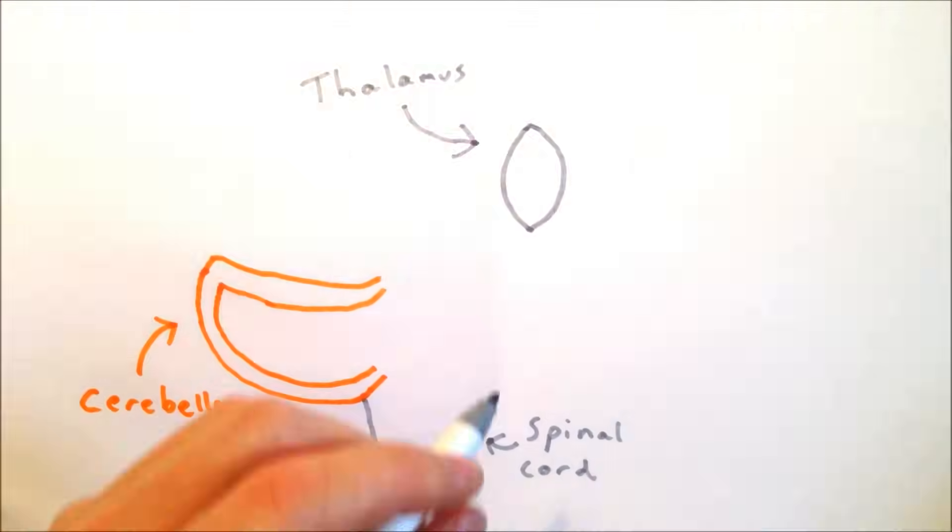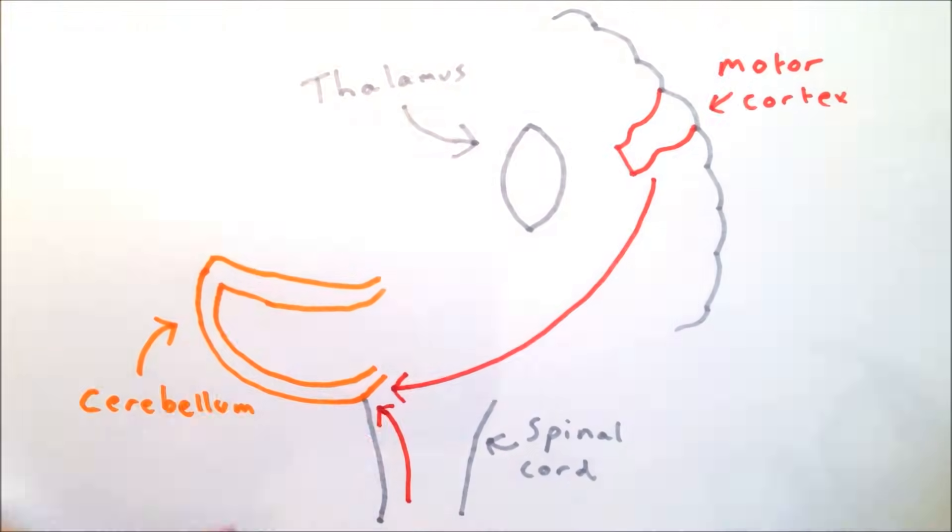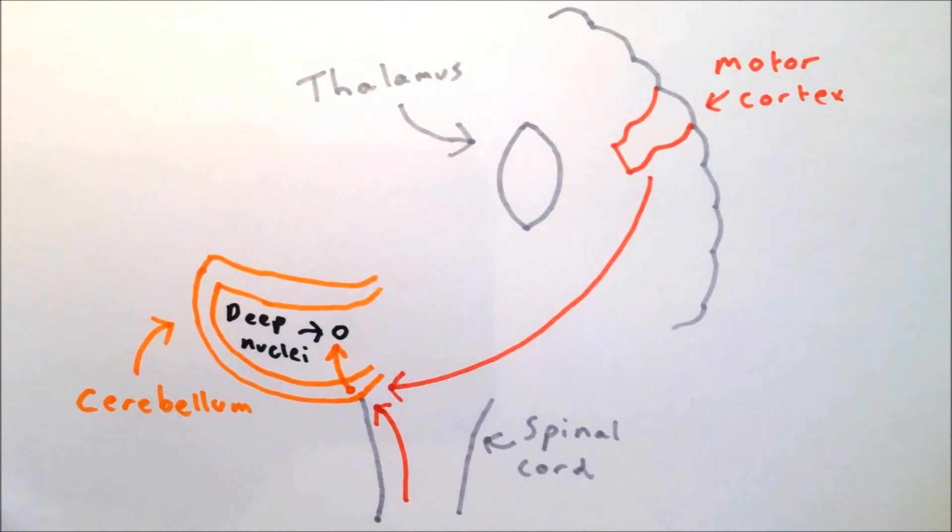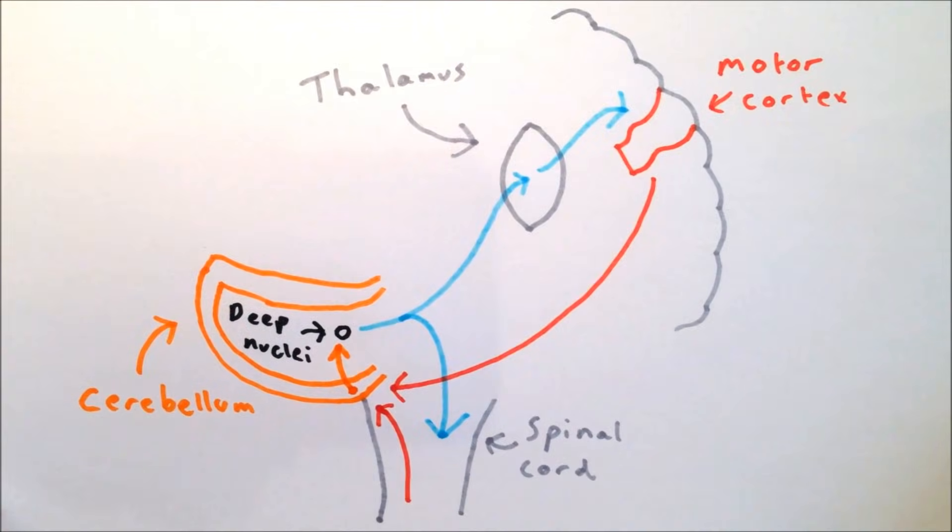In summary, the cerebellum receives information about bodily movements from the motor cortex and spinal cord in the form of mossy and climbing fibers. These project to the Purkinje cells in the cerebellar cortex, which in turn project to the deep cerebellar nuclei. The cerebellar nuclei then project back to many of the same initial areas.